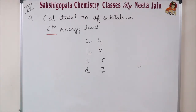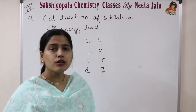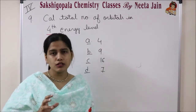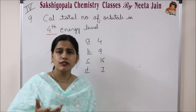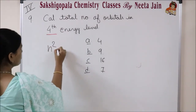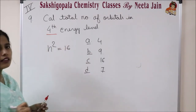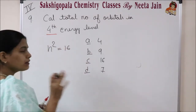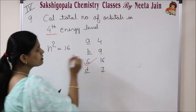Question number 9: calculate total number of orbitals associated with the fourth energy level. The formula is N squared. For N equals 4, that gives 16. If it were the fifth energy level, the answer would be 25. So the correct answer is 16.